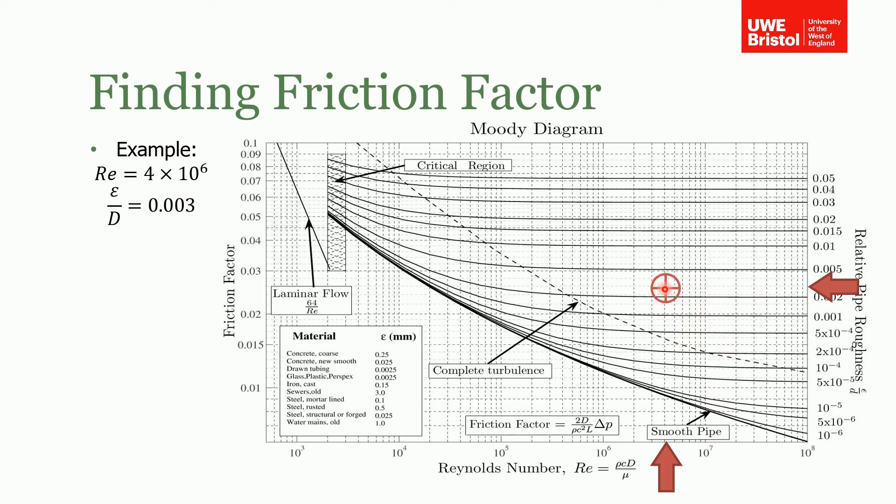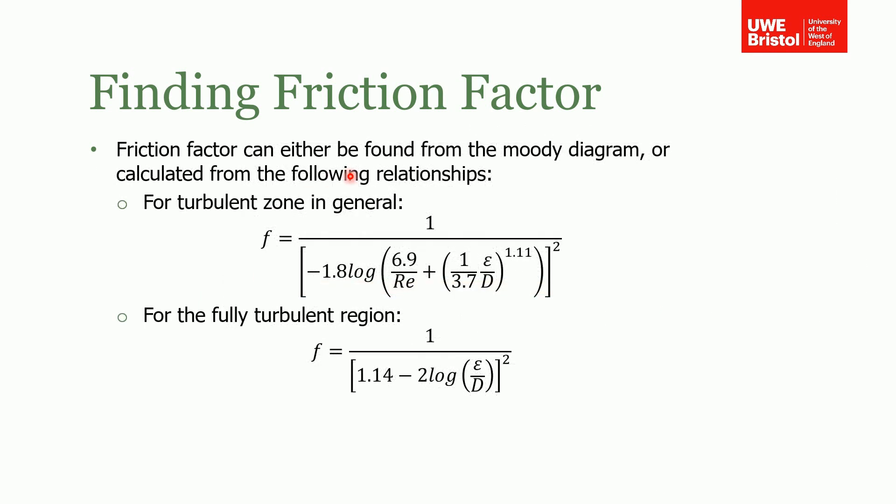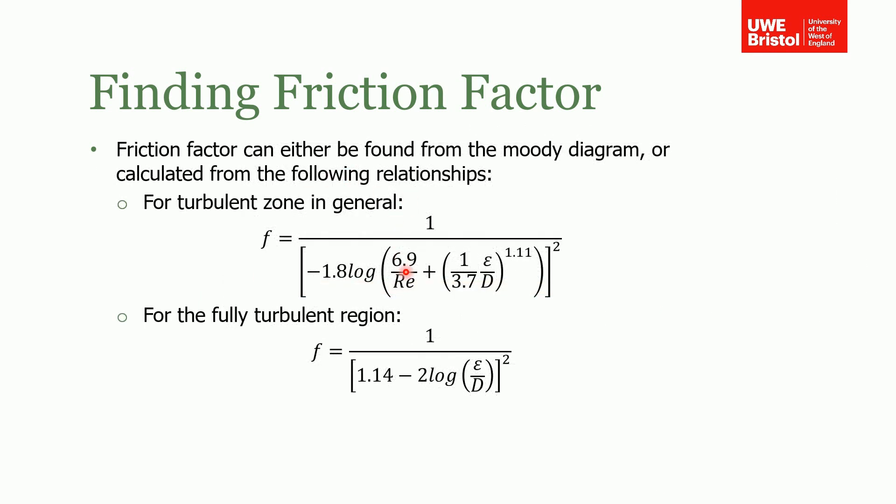If we look at where those two intersect, it's around that point there. Then we read that on the left hand side and we'd read off our friction factor, which would be around 0.026, something like that. So that's how we do it. In those instances, particularly in the last example, because we were interpolating between two lines, it was quite difficult to determine an accurate friction factor.